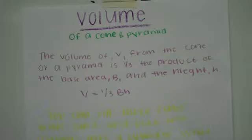The volume, V, from the cone or pyramid is one-third the product of the base area, B, and the height, H. The formula would be V equals one-third BH.